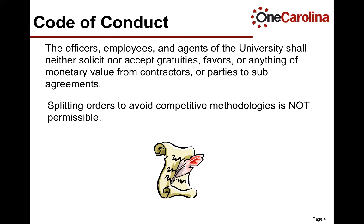It is important to also adhere to the Code of Conduct regarding the Purchasing Guidelines. The Code of Conduct is actually derived from the South Carolina Ethics Guidelines. Therefore, it is not permissible for the officers, employees, or the agents of the University to solicit or accept credits, gratuities, favors, or anything of monetary value from contractors or parties to sub-agreements. Also, it is not permissible to split orders to avoid competitive methodologies that have been established. We will review the competitive methodologies in the next slide.